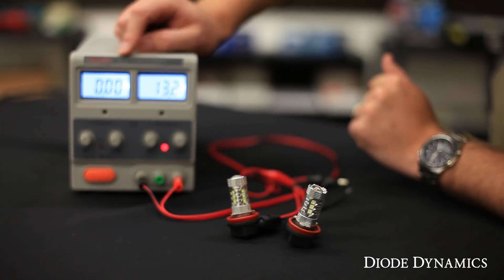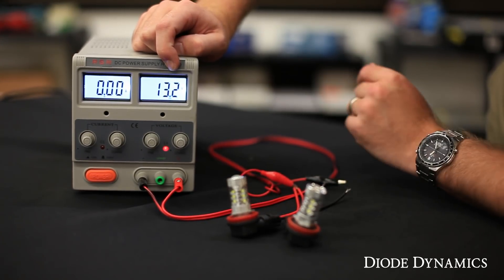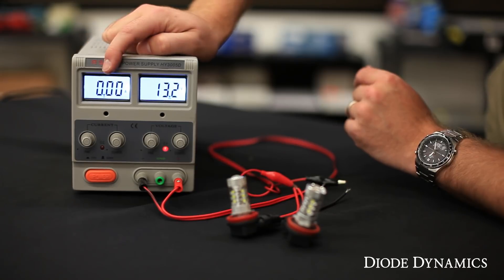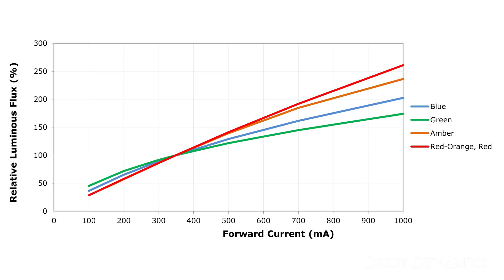Now for our power supply here, we have a 13.2 volt output, which is about the same as your vehicle's battery. We're going to see what the current is when we hook up these bulbs. LEDs are dependent on the current flowing through them, which determines the total output of the LED.